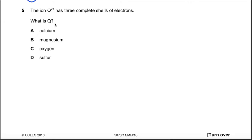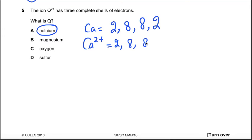Question number five: the ion Q2+ has three complete shells of electrons. What is Q? Q is calcium, because in the calcium 20 electrons are present. In the first shell 2, second shell 8, third shell 8, and the fourth shell 2 electrons are present. And after losing two electrons: 2, 8, 8. This is the first shell, this is the second shell, and this is third shell. So answer is calcium.